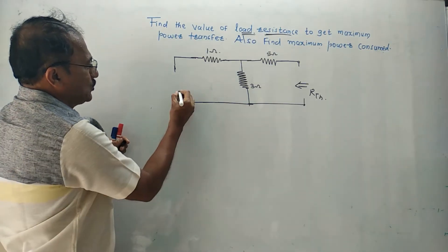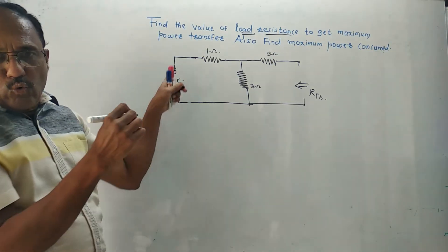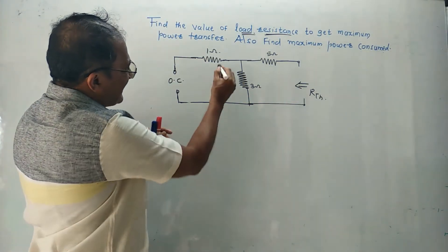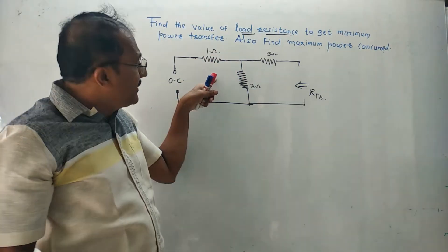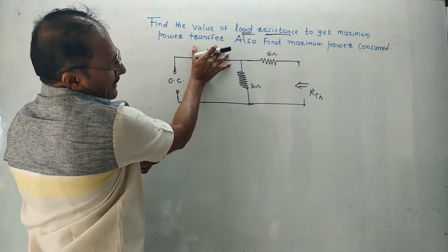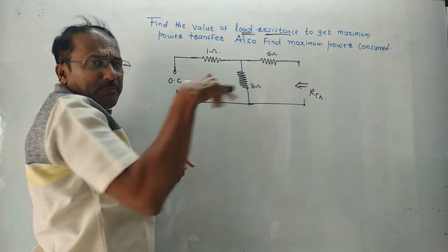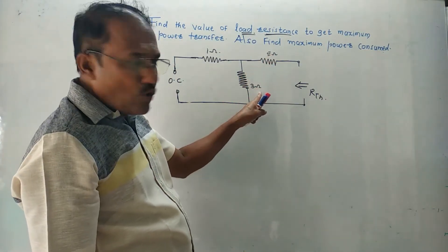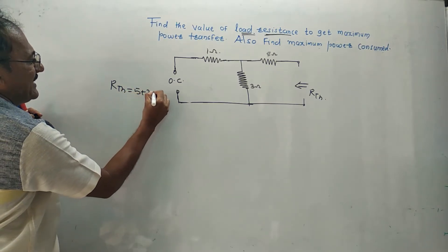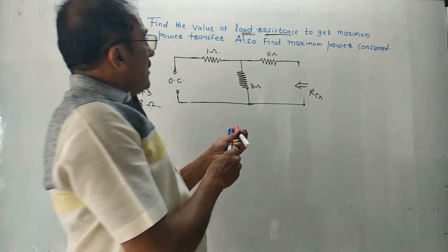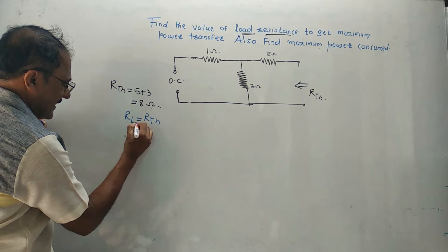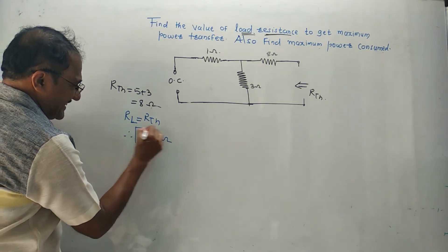Mark those two points as open-circuit. Whenever there is an open-circuit, current will not flow through that branch — meaning current will not flow through the 1 ohm resistor. Even if 1 ohm is shown in the diagram, it is of no use because current is not flowing through it, so we neglect it. Since this part is neglected, the 5 ohm and 3 ohm are in the same wire — they are in series. RTH equals 5 plus 3 equals 8 ohm. Therefore RL equals 8 ohm — this is the answer to the first part.